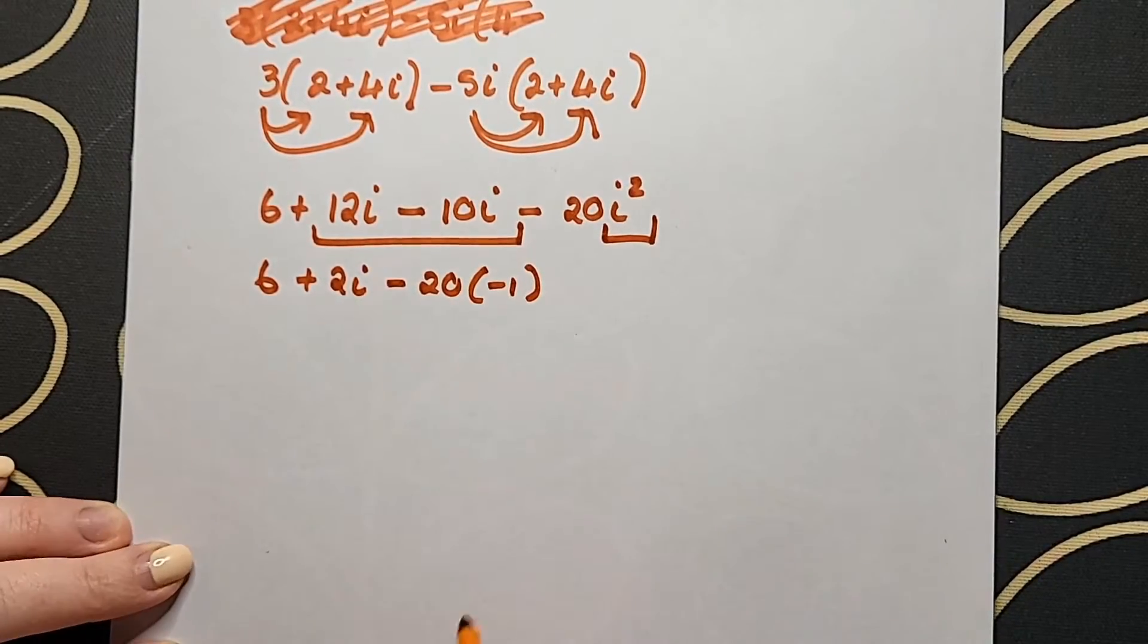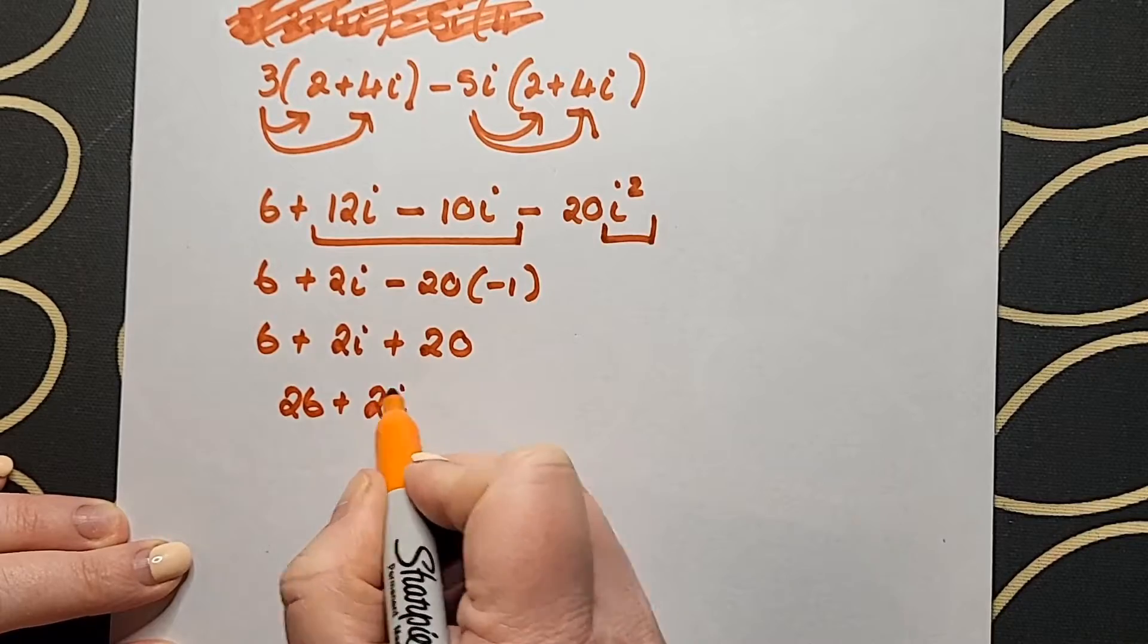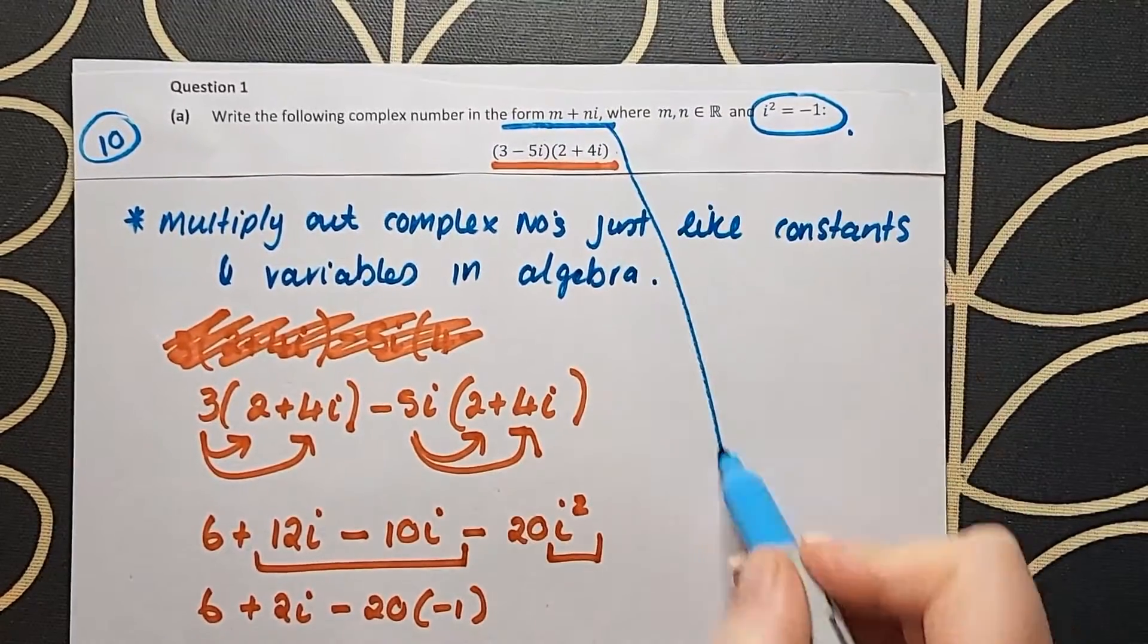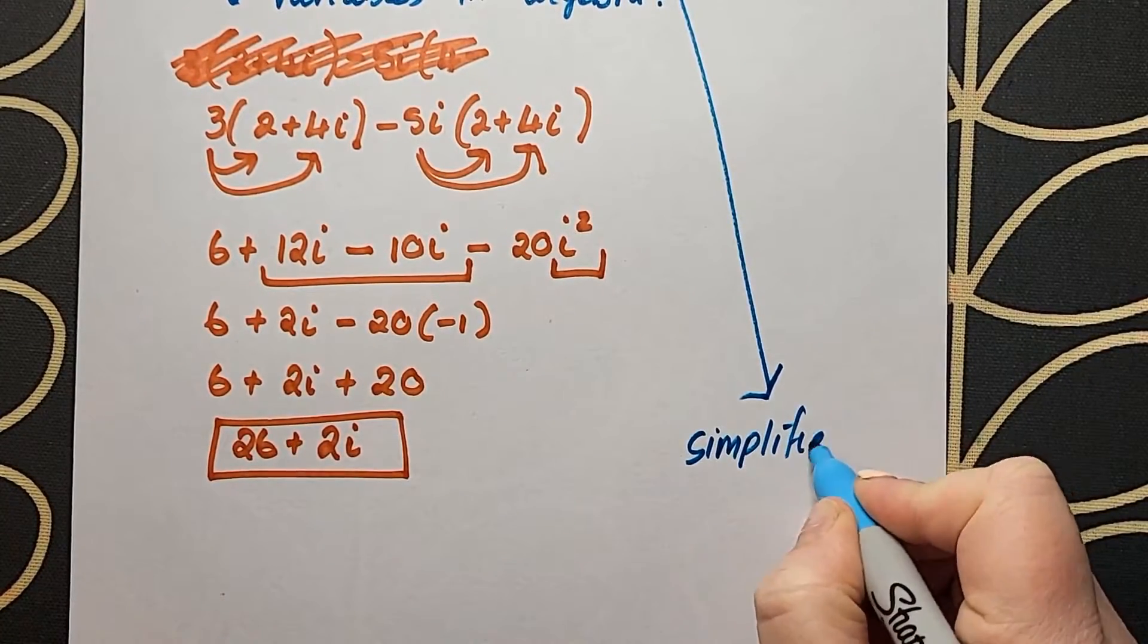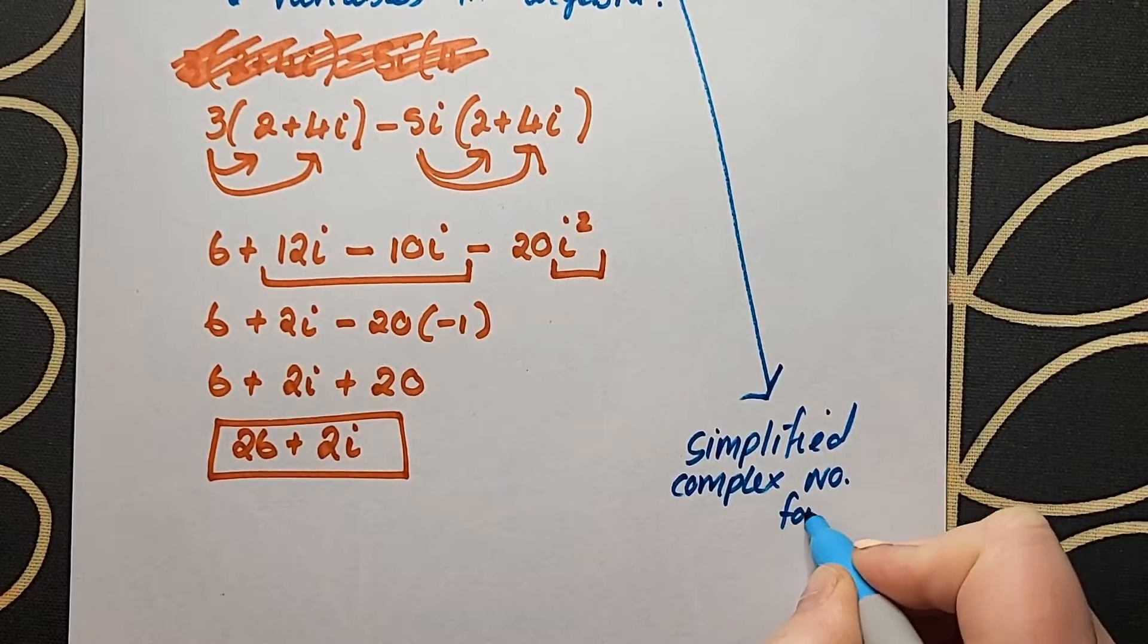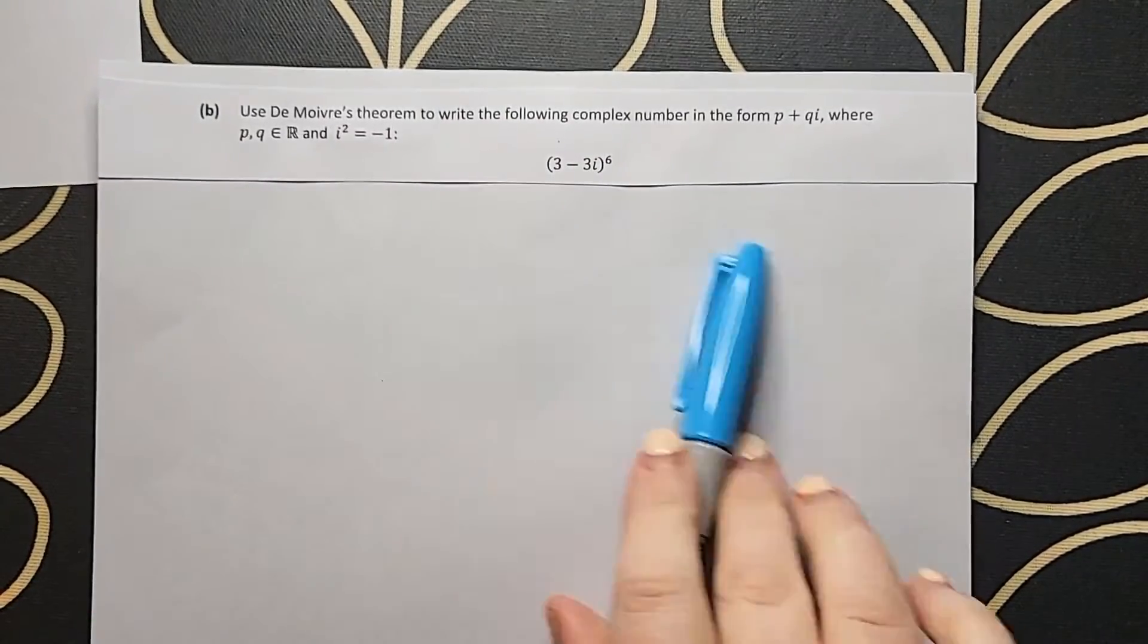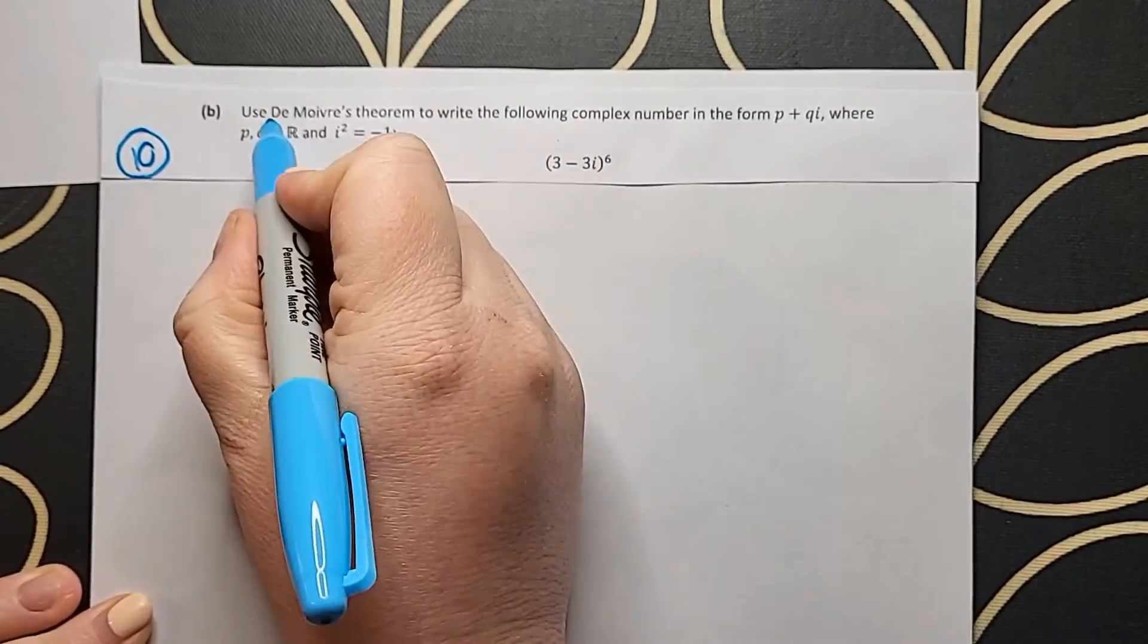It's important to take your time with these things. One of the misconceptions at higher level is that you need to know all the hard stuff, when in fact you need to know how to do the simple stuff really, really well. Make sure when you are finishing up any calculation in complex numbers that you write it in the correct form - the simplified complex number form, which is a plus bi or x plus yi. In this case it was m plus ni.